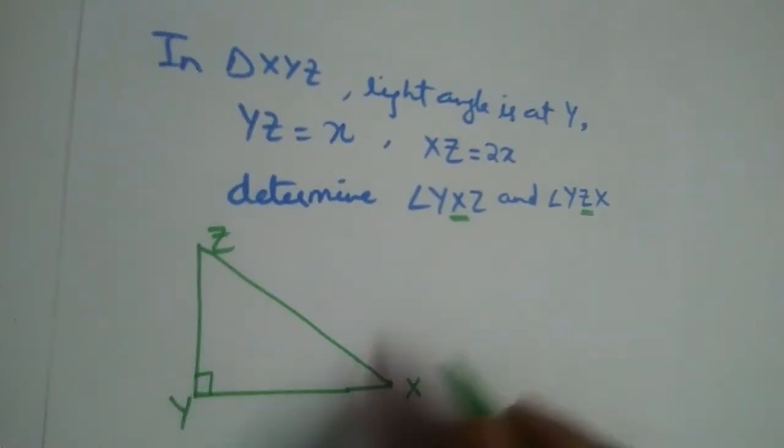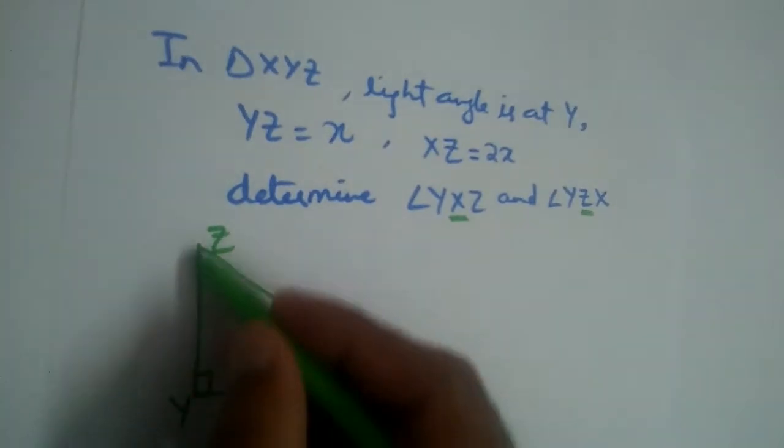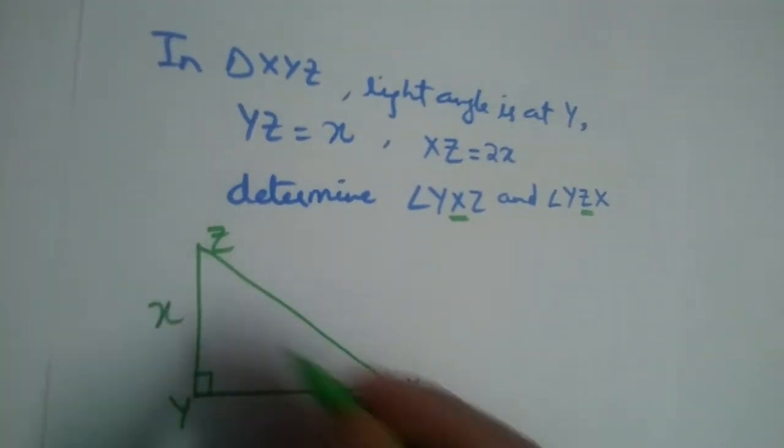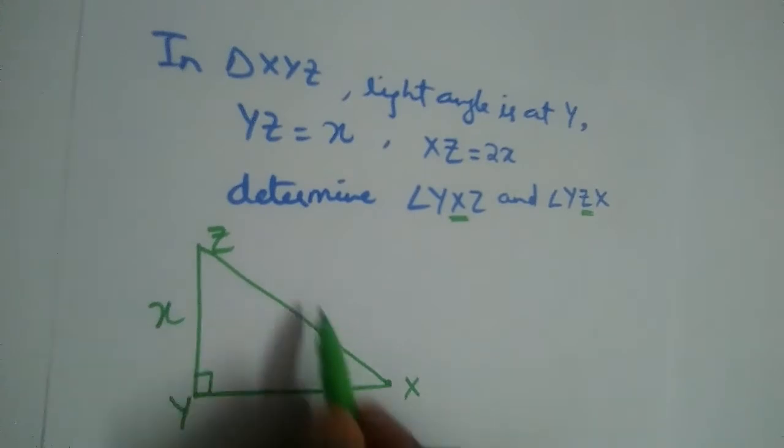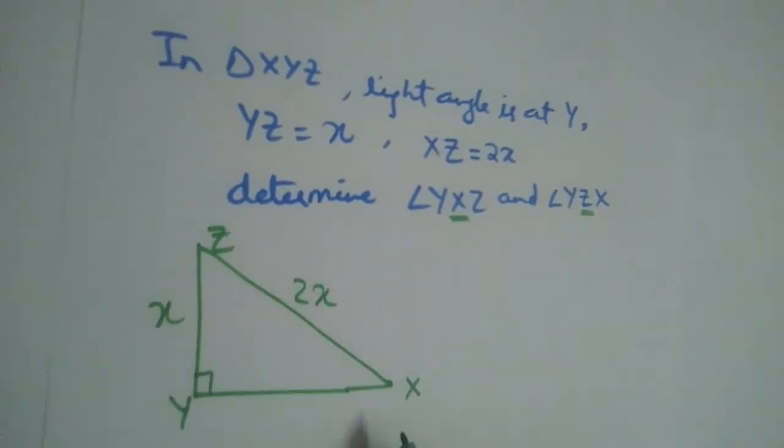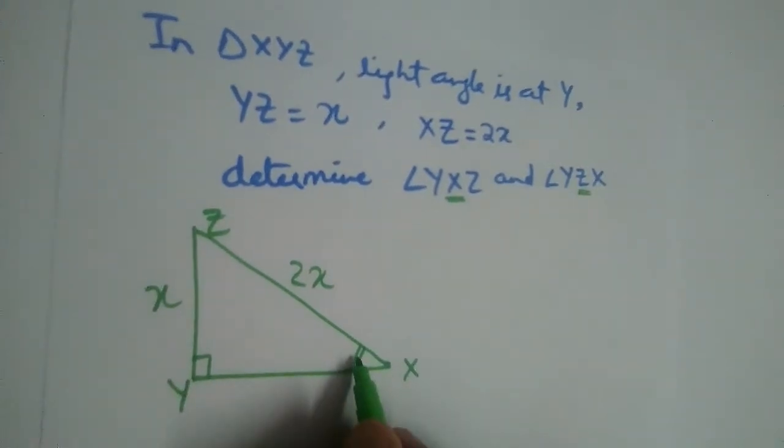So this is 90 degrees. What else is given? YZ, this is x given, and XZ is 2x. We need to find angle X and angle Z. Let us find X first, angle X.